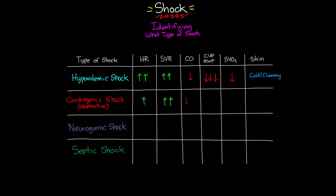As a result of the weak heart and increased afterload, we see a drop — sometimes a profound drop — in cardiac output. For preload indicators: since the heart can't push blood forward, things back up throughout the system, so you'll see an elevation in preload indicators such as pulmonary capillary wedge pressure and CVP. Venous oxygen saturation decreases as cells extract more oxygen from slowly moving blood, and skin is again cold and clammy due to vasoconstriction.